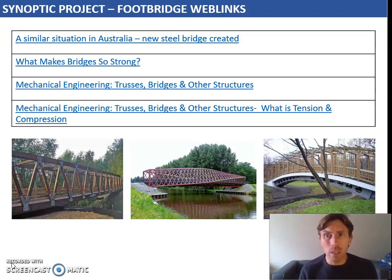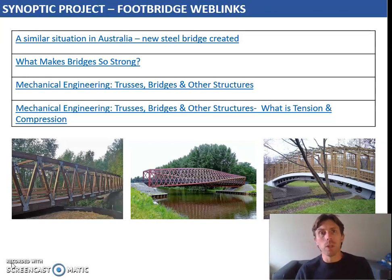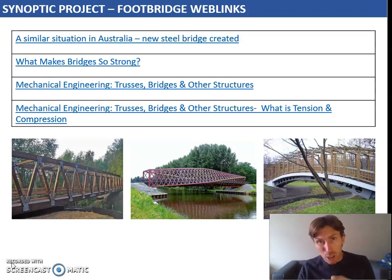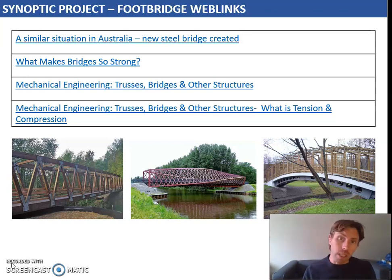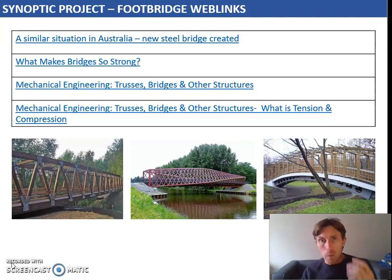I've got four little films to help put things in context. First, a film about a bridge in Australia that was ineffective — people couldn't cross and it was dangerous — so they put in a new bright red steel bridge. The second is about what makes bridges strong, in terms of structure. Third is about trusses — generally with straws you'll make a truss bridge, which uses interlocking triangular shapes. Finally, the same presenter talks about tension and compression, which we've already covered. Go through these films, pause as needed, and we'll continue.